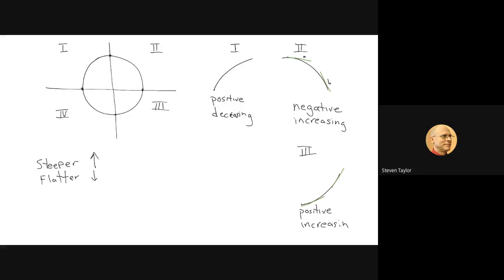The last one is region four. It looks like this — it's going downhill from left to right, so it is negative. And it is getting flatter as I go from left to right, so it is decreasing.